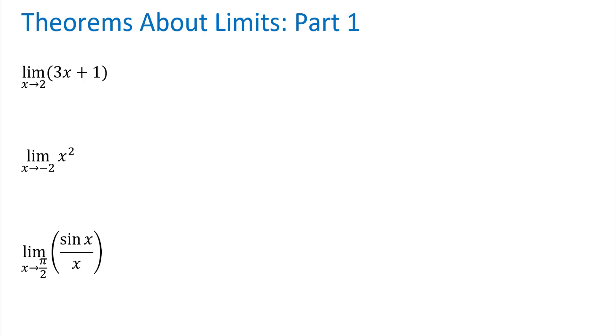So the first one is asking what happens to the outputs of the function 3x plus 1 when the inputs get really close to x equals 2, but not at x equals 2. We actually know a lot about this function y equals 3x plus 1. It's a line with a y-intercept of 1 and a slope of 3.